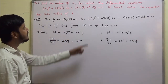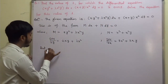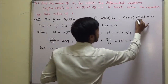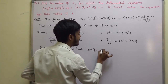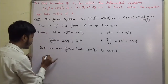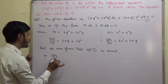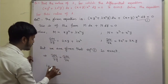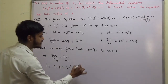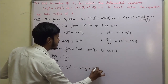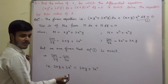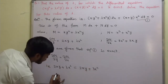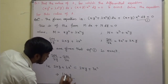We are given that this equation is exact. Therefore del M by del y equals del N by del x. That is, 2xy plus lambda x squared equals 2xy plus 3x squared. Equating the coefficients of like powers, lambda is the coefficient of x squared on the left and 3 is the coefficient of x squared on the right, so this implies lambda equals 3.